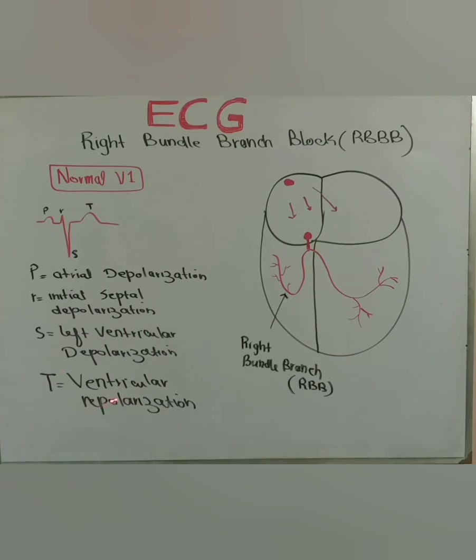The T wave is because of ventricular repolarization. So this is the normal morphology of chest lead V1 on the ECG paper: a small R wave, a deep S wave, and a T wave.